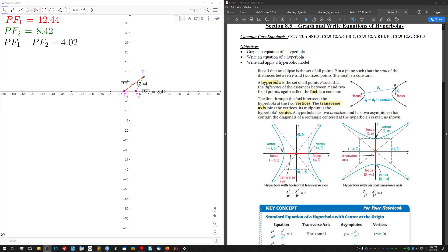First, let's look at the definition. The definition of a hyperbola is the set of all points P such that the difference of the distances between P and two fixed points called the foci is a constant.